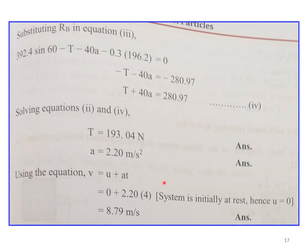After solving the equations for block A and block B, we obtain the tension and acceleration. To find velocity after 4 seconds starting from rest: v = u + a·t, where u = 0, acceleration a = 2.2 m/s², and t = 4 s. This gives final velocity v = 8.79 m/s.